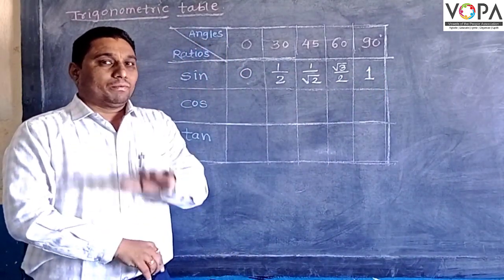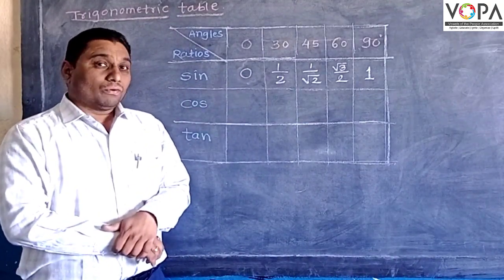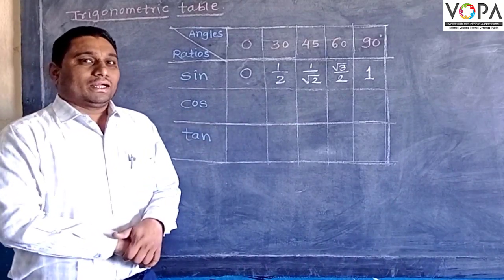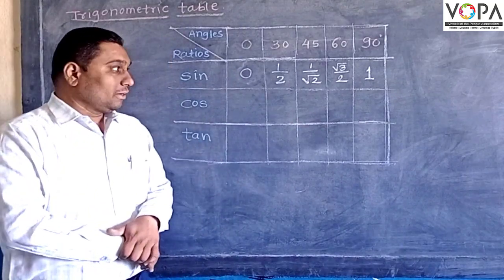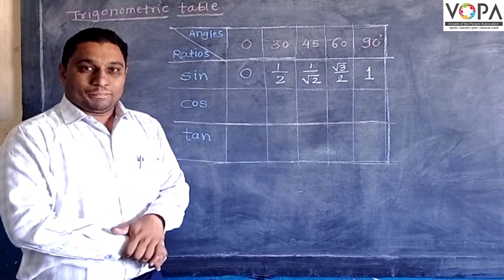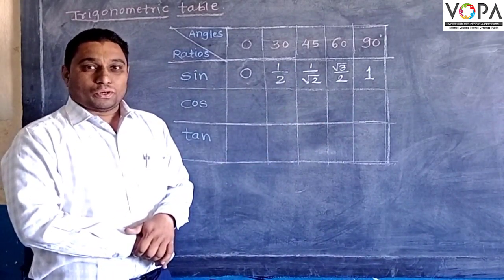You have to just remember this sine table for all these angles. Now if you want to make the cosine table, I will give you a trick: you can put down the values in reverse manner in this column, then you automatically get the values of the cosine ratio.